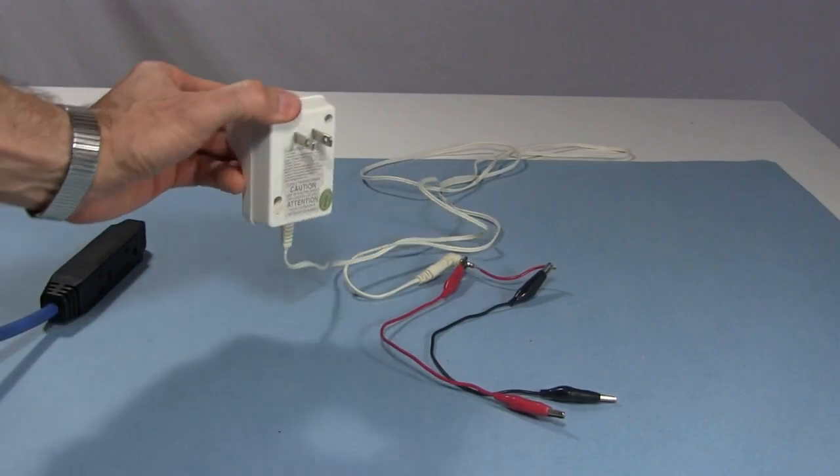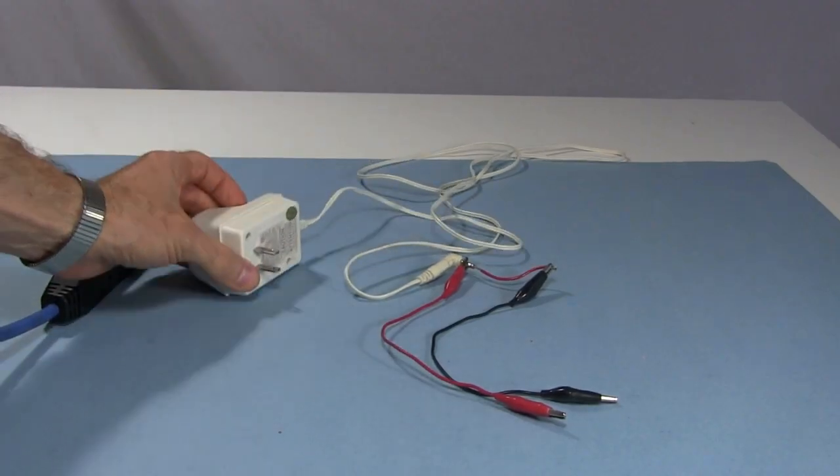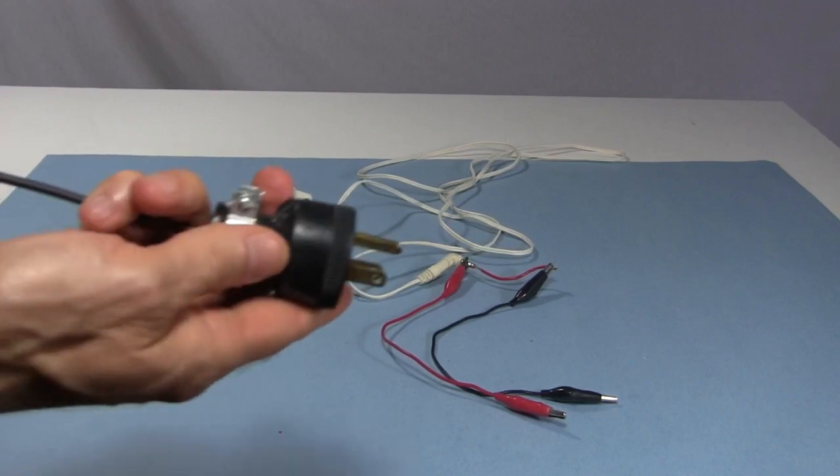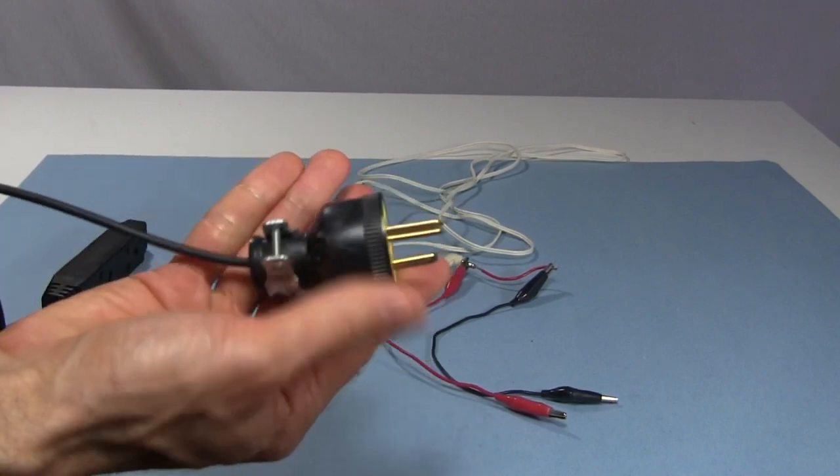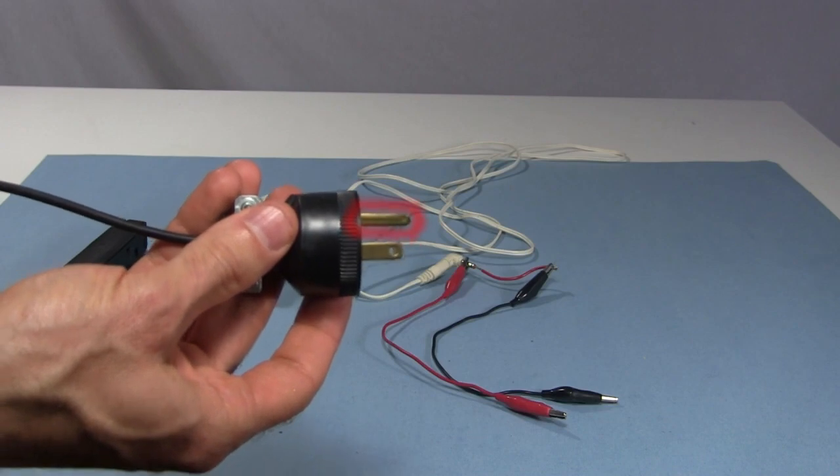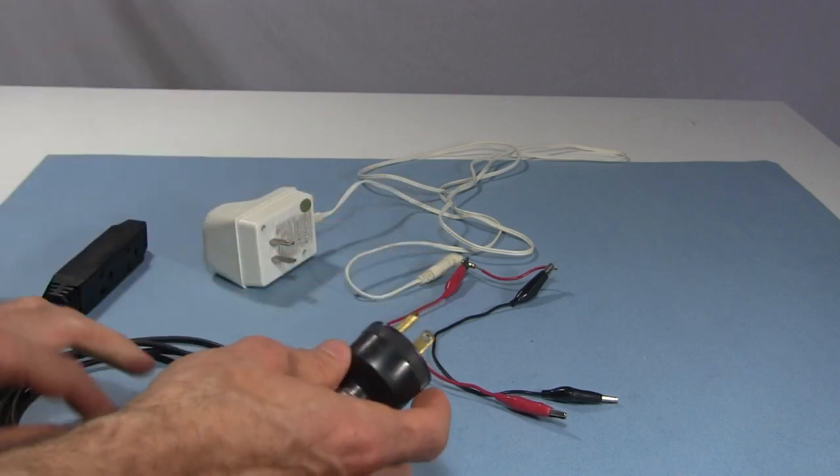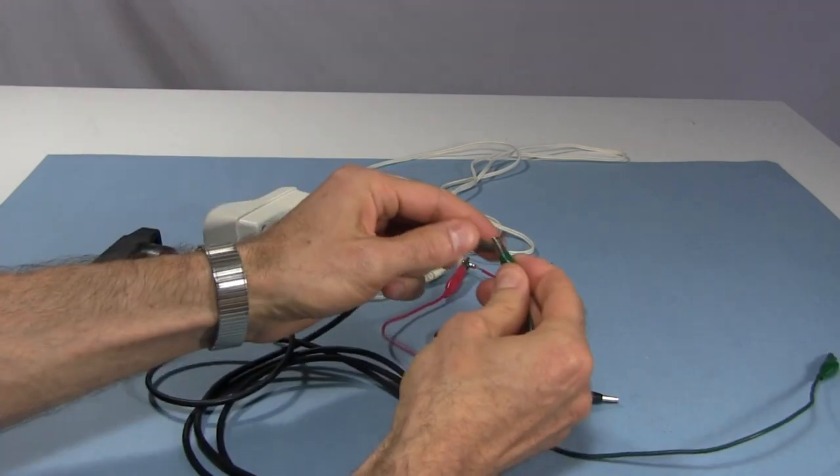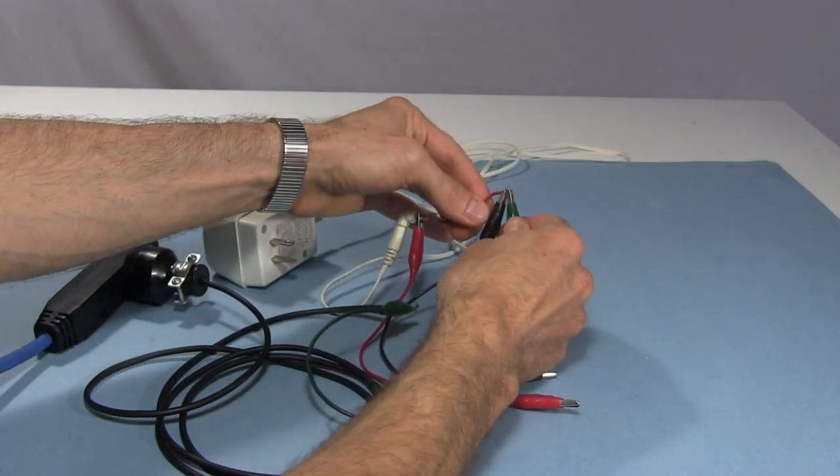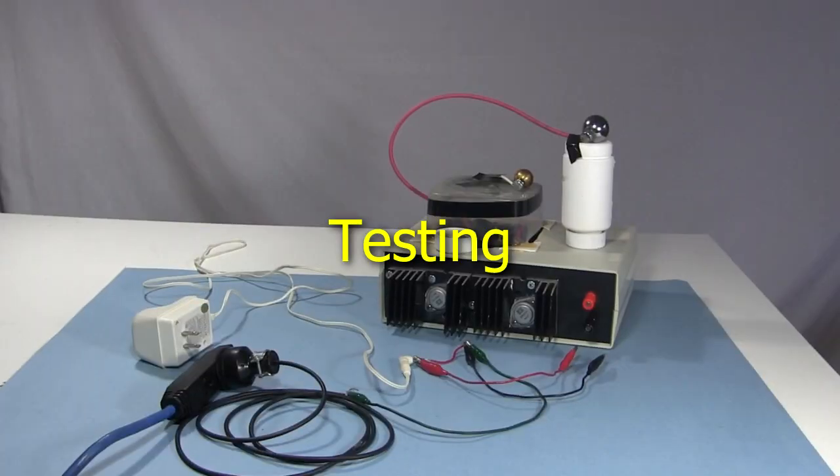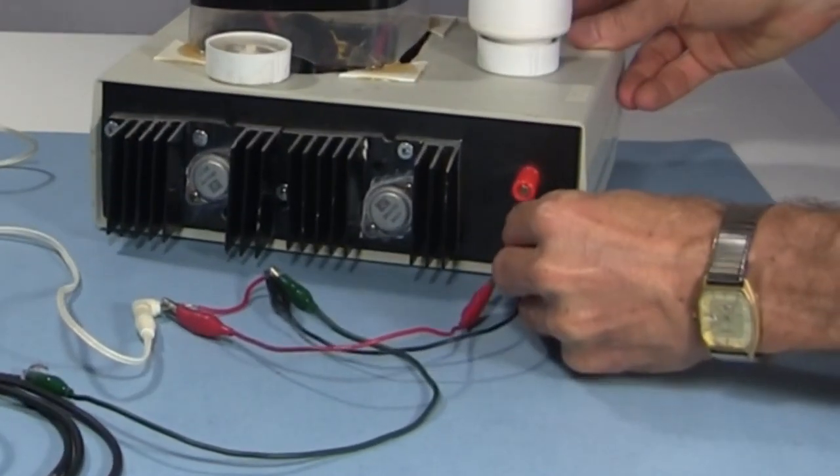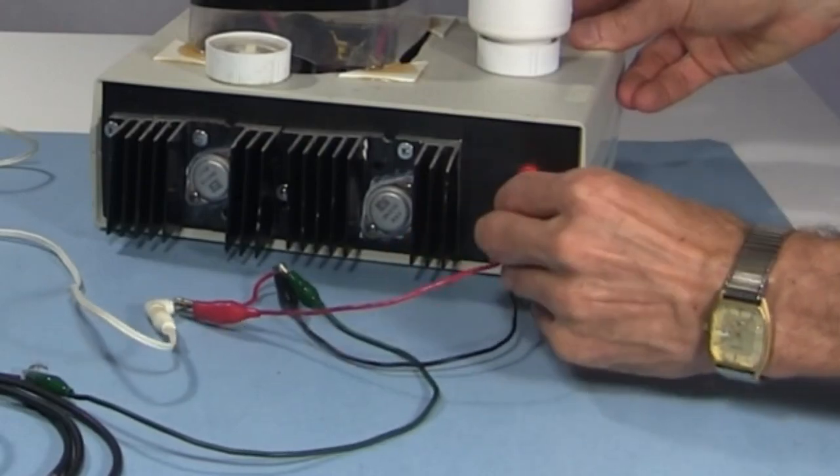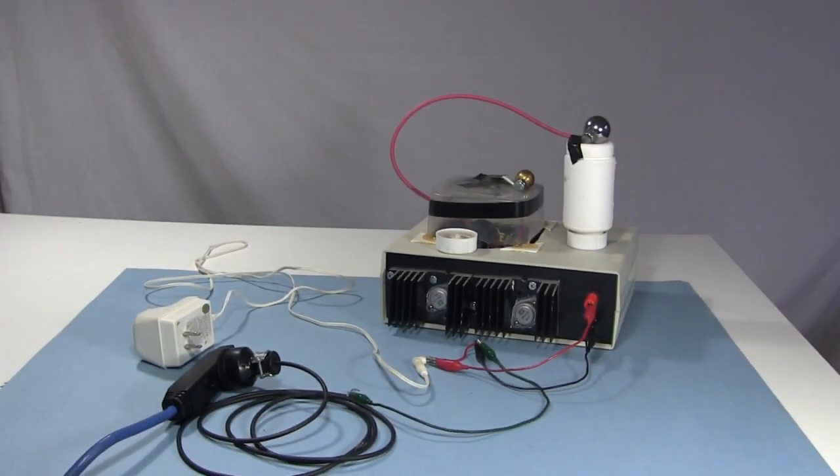But this adapter doesn't have any ground, and my power supply needs the negative to be grounded. I bought this stand-alone plug at a hardware store, and connected a single wire to the ground prong, the longest prong on the plug. When I plug that into the wall, this wire will be connected to earth ground. I use an alligator clip to connect that to the negative side from the adapter. Now to test the power supply. I connect the adapter's negative to the black binding post, and the adapter's positive to the red binding post. I plug in the adapter.